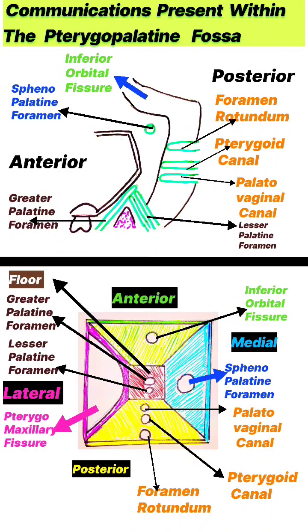Today we are going to talk about communications present within the pterygopalatine fossa. Anteriorly, the pterygopalatine fossa has one communication; posteriorly it has three communications; medially it has one communication; laterally it has one communication; and inferiorly it has two communications. So in total, the pterygopalatine fossa has eight communications.